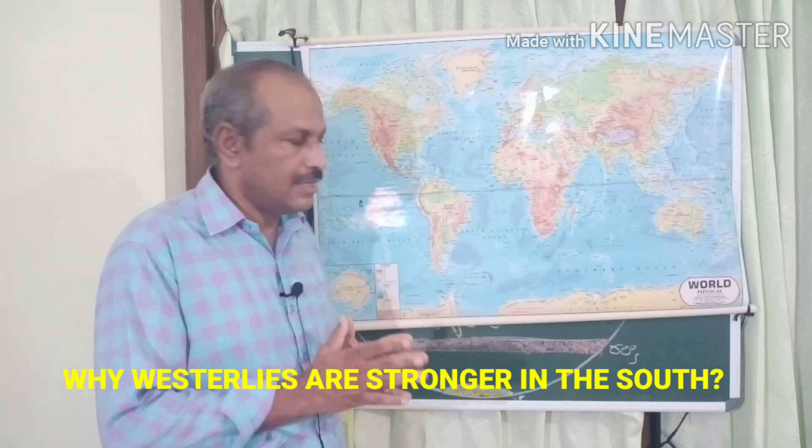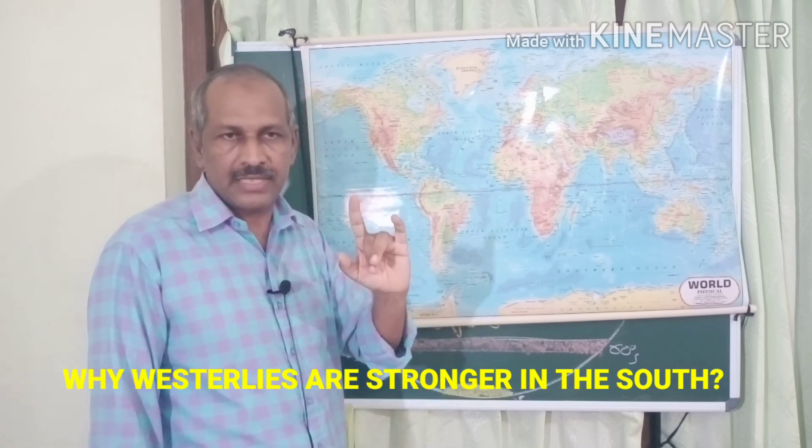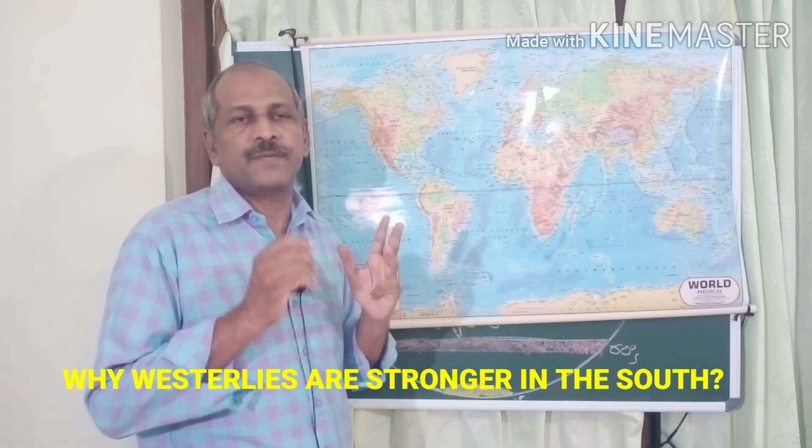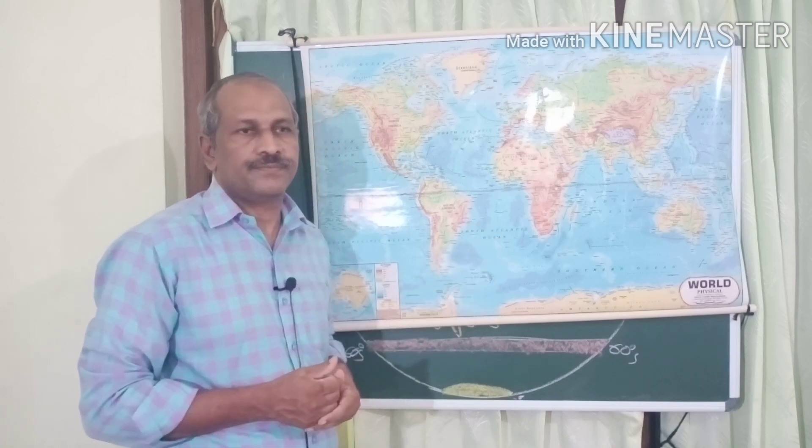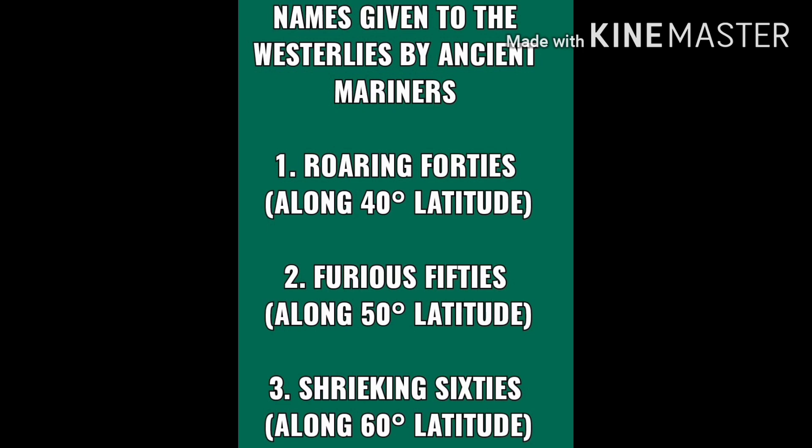The westerlies blow very strongly in the southern hemisphere due to the vast expanse of ocean and absence of large continents. Ancient mariners gave these westerlies different names: the roaring forties (along 40° latitude), the furious fifties (along 50° latitude), and the screaming sixties (along 60° latitude) in the southern hemisphere.